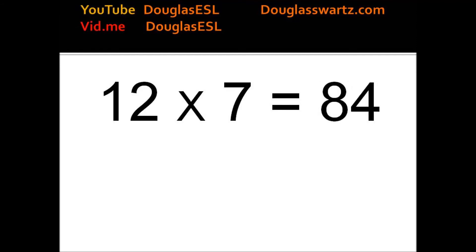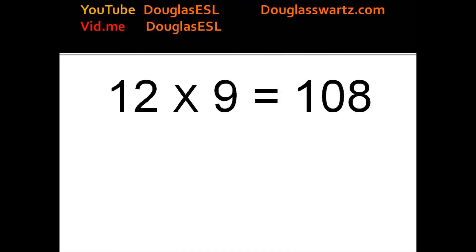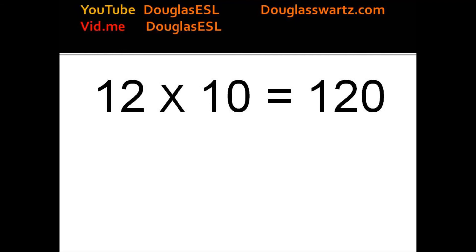12 times 7 equals 84. 12 times 8 equals 96. 12 times 9 equals 108. 12 times 10 equals 120.